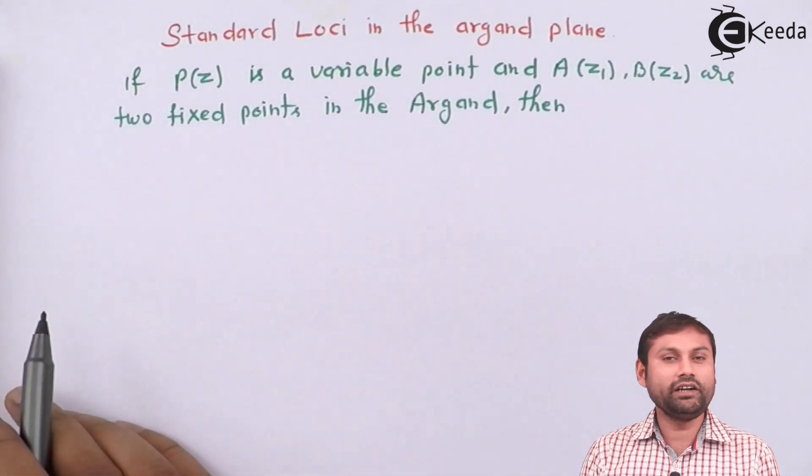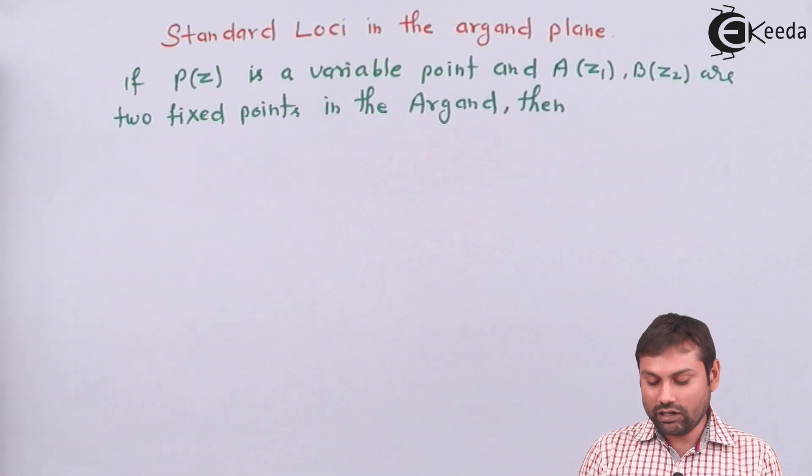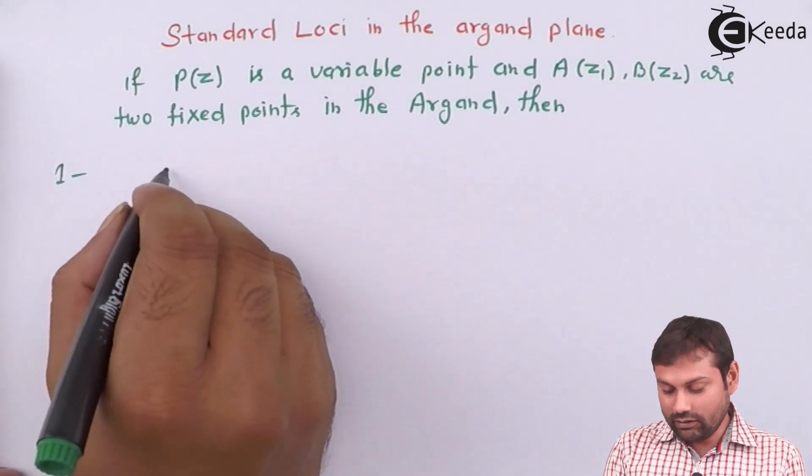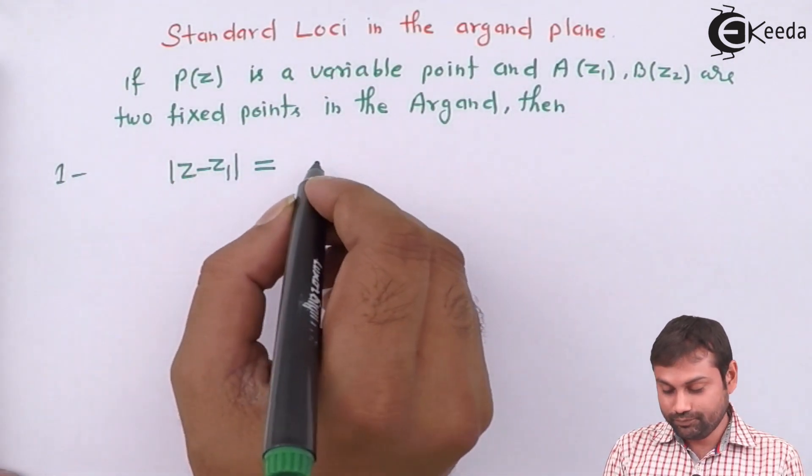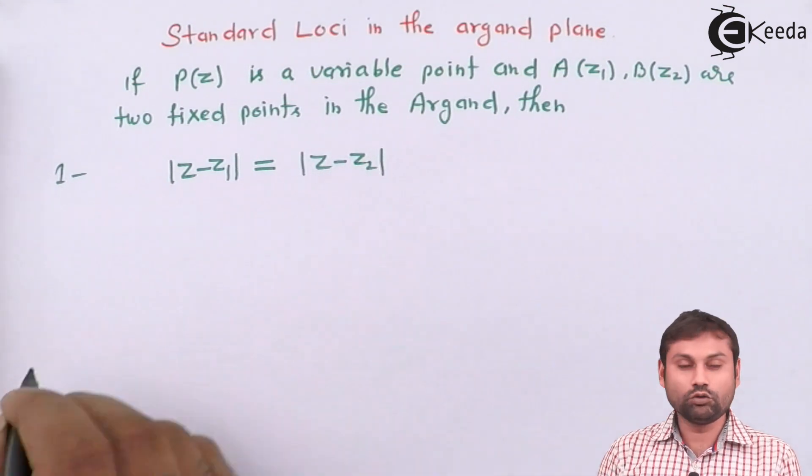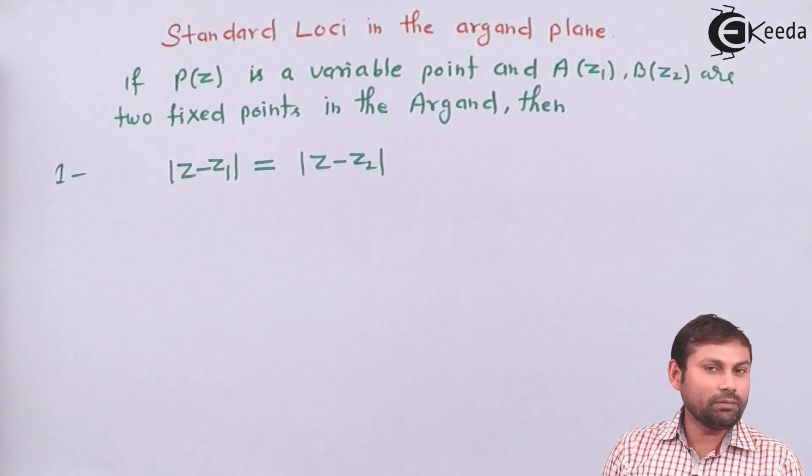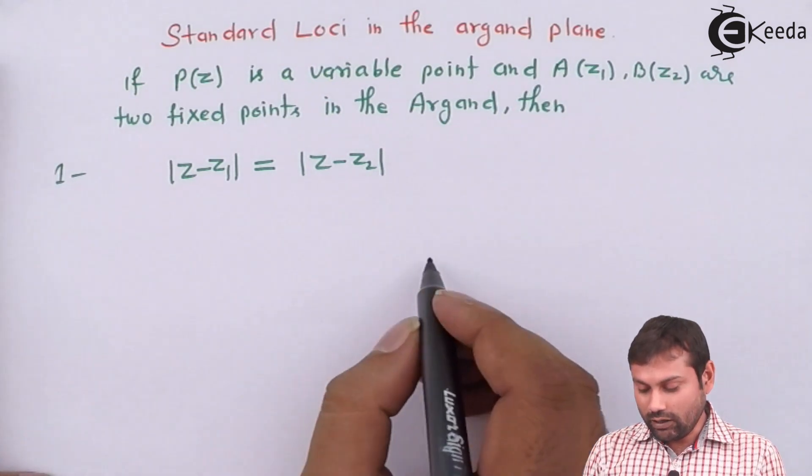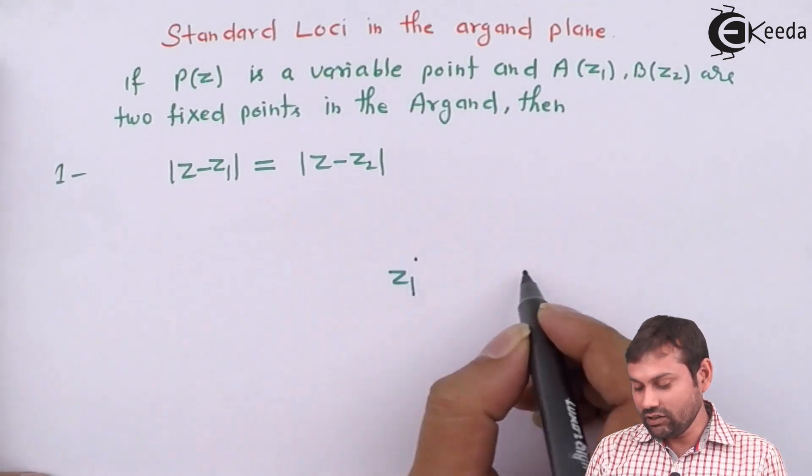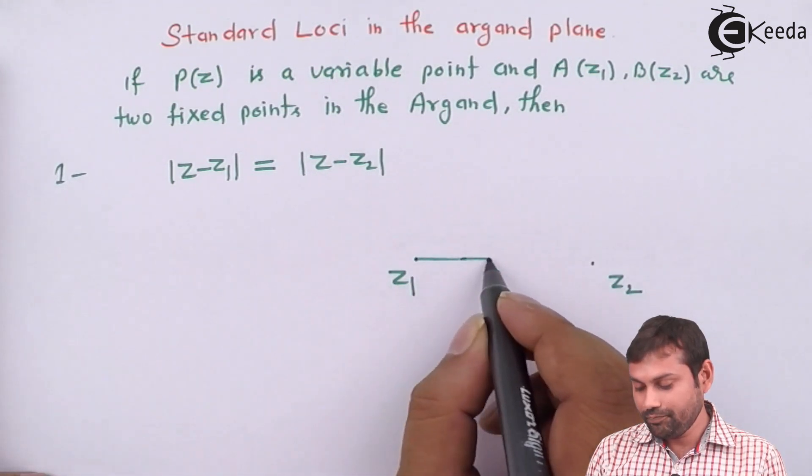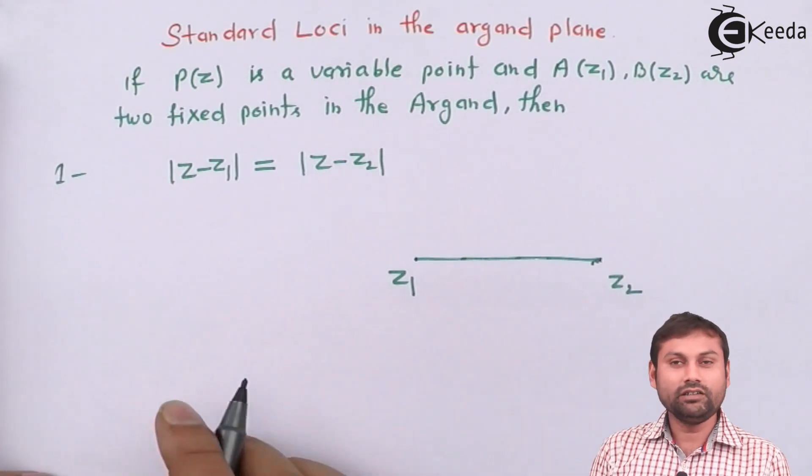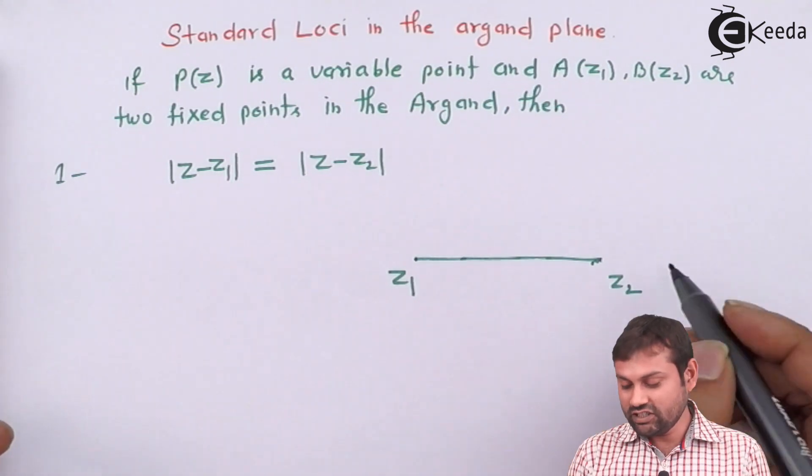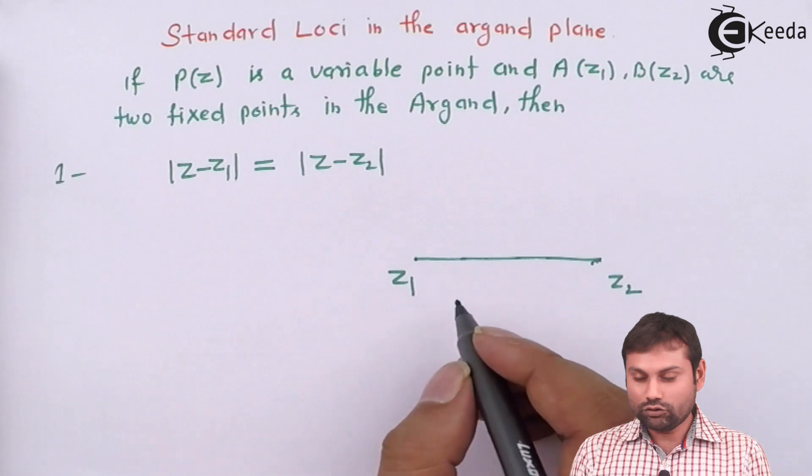If P(z) is a variable point and A(z1), B(z2) are two fixed points in the argand plane. So first one, if somewhere written like this, |z - z1| equals to |z - z2|. So this is the equation of locus. Now we will check which figure it represents. If I take this is z1, this is z2, and I join this line segment.